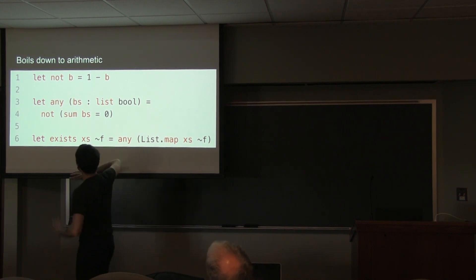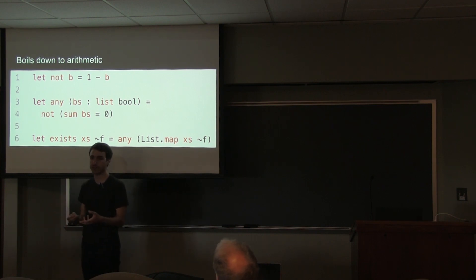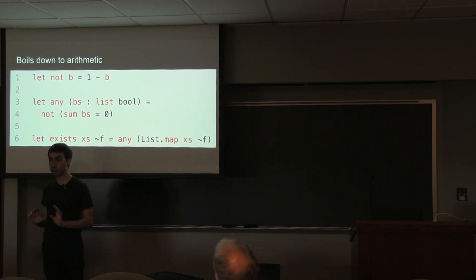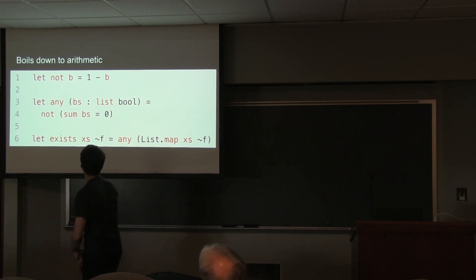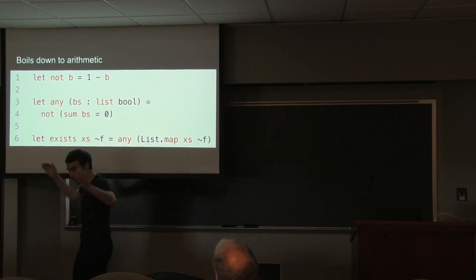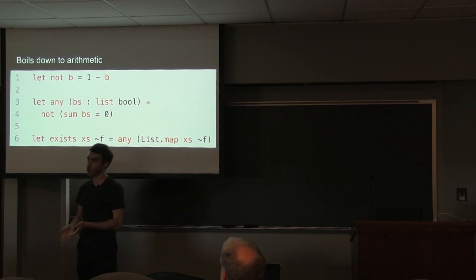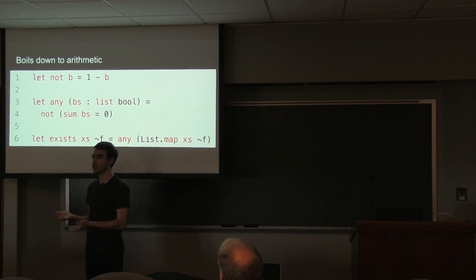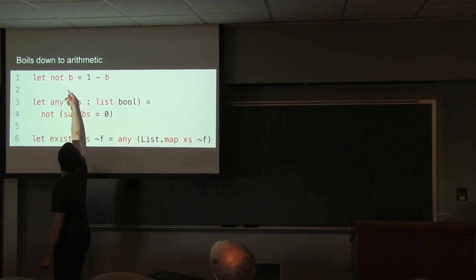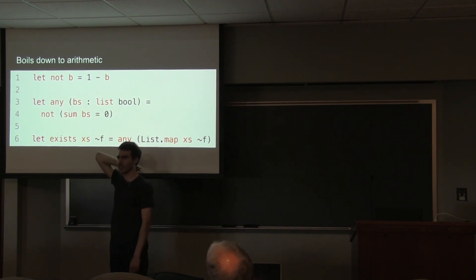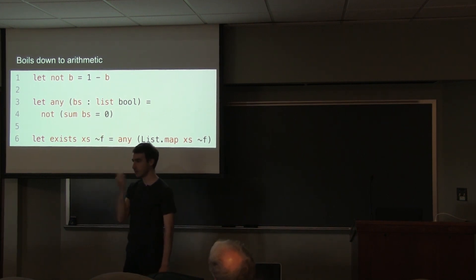There's some way of implementing equality. You have field elements and can make arithmetic constraints — essentially additions and multiplications. What you do is take your booleans, sum them all up, and say it's not the case that the sum of all these booleans is 0. If any of them are true, that will be the case. And you code NOT as: not b is 1 minus b. So booleans are coded as 0 and 1, and addition is mod p where p is actually super big in practice.